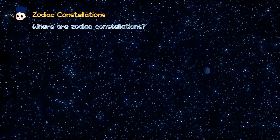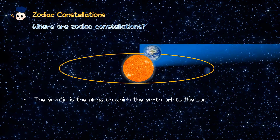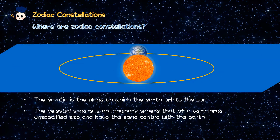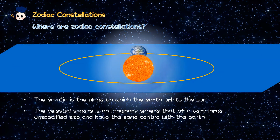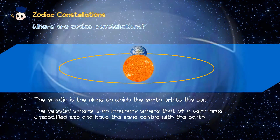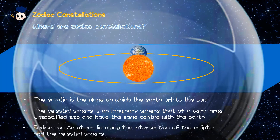Where are the zodiac constellations? The ecliptic is the plane on which the Earth orbits the Sun. The celestial sphere is an imaginary sphere of a very large and specified size that has the same center as the Earth. Zodiac constellations lie along the intersection of the ecliptic and the celestial sphere.